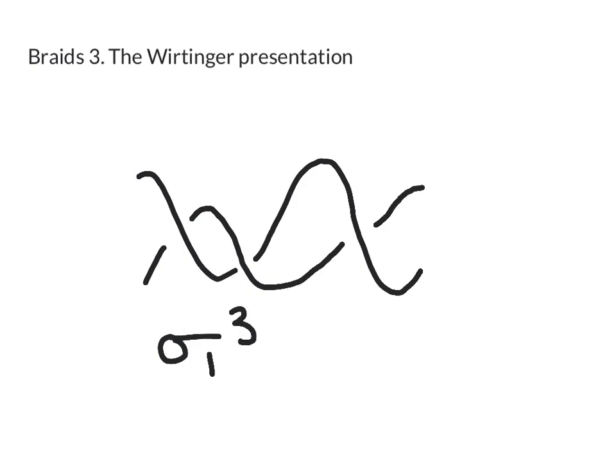In other words we have three crossings. One, two, three and in each the strand that's above is the one that's going from northwest to southeast like this. Okay so that's sigma one cubed.